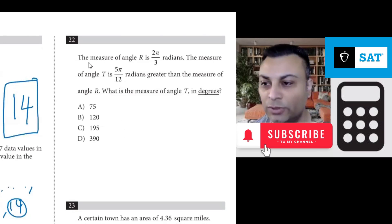Question 22. The measure of angle r is 2π/3 radians. The measure of angle t is 5π/12 radians greater than the measure of angle r. What is the measure of angle t in degrees?